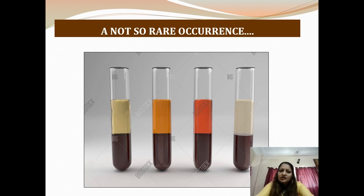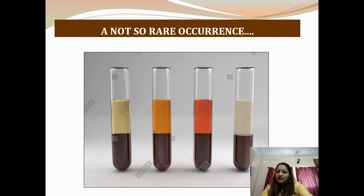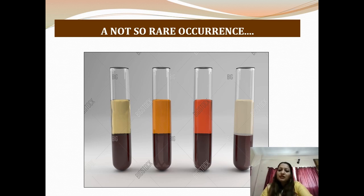This is not such a rare occurrence. Interference is very commonly seen and there are three major sources. The clear serum sample is sans any interference. The next is an icteric sample, where the interference is by bilirubin. The red-colored appearing sample is one of possible hemolysis, where the interference is provided by hemoglobin. And the last one, milky white in appearance — that turbidity is most often caused by lipemia, with interference usually by triglycerides, particularly chylomicrons.